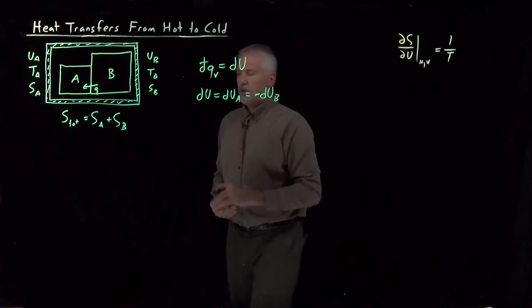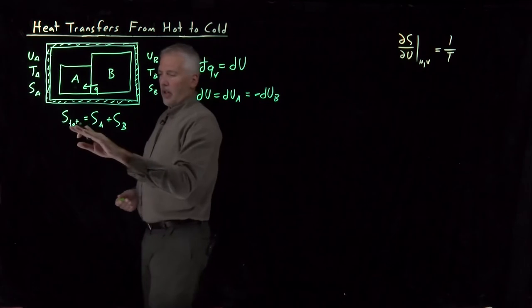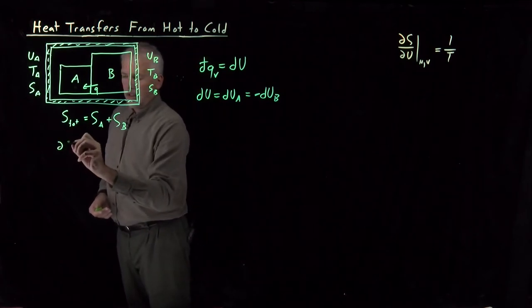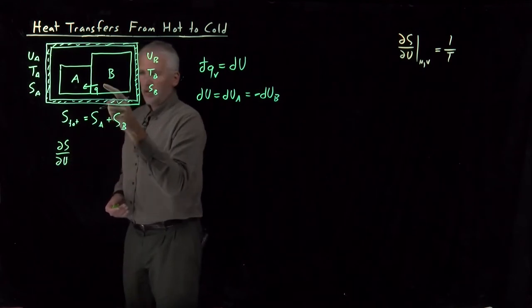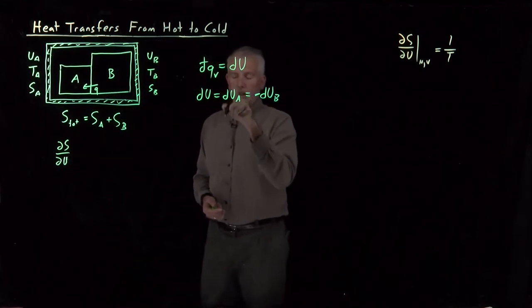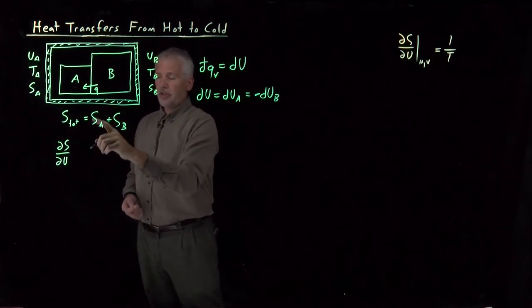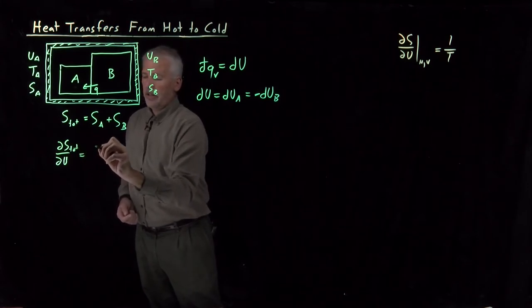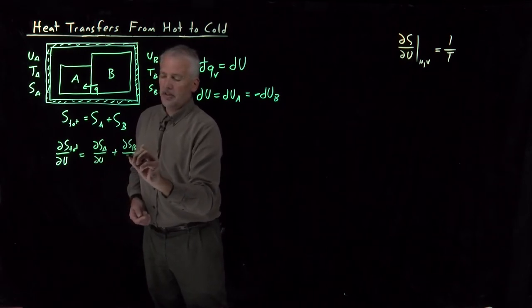So with those facts in hand and our new thermodynamic relationship, we can say total entropy is entropy of A plus entropy of B. If some amount of heat, or equivalently internal energy, is changing in the two systems, then the change in the total entropy as the energy changes is equal to whatever the change is in system A plus whatever the change is in system B.